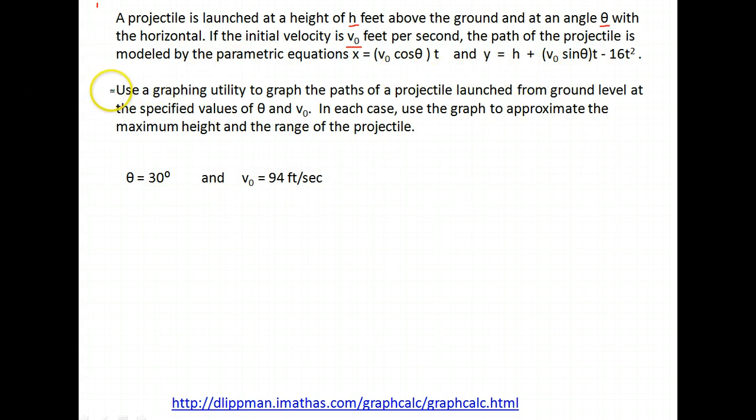Now we're asked to use a graphing utility to graph the path of the projectile launched from ground level at the specified values for theta and v naught. In each case use the graph to approximate, now here's what we're going to approximate, the maximum height and the range of the projectile.